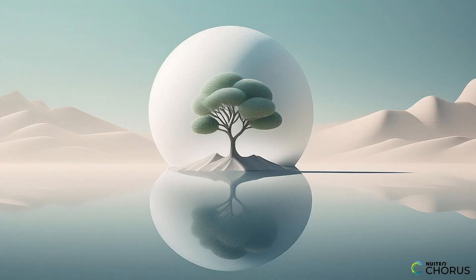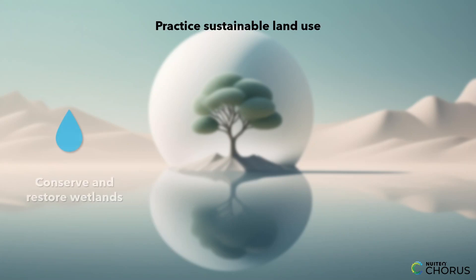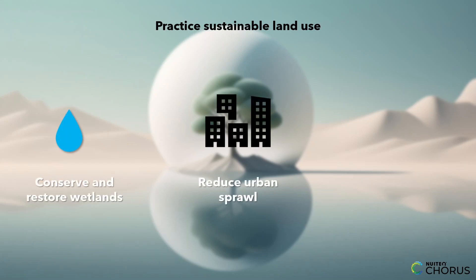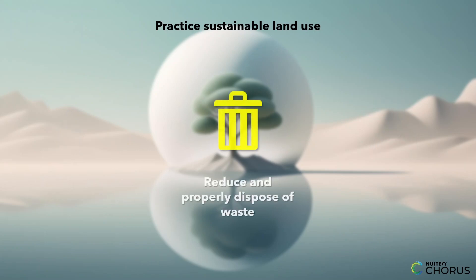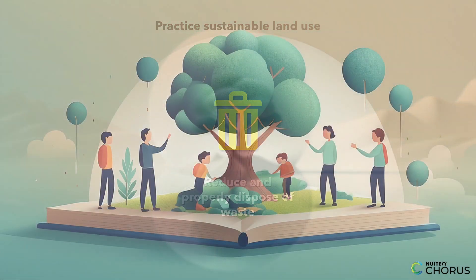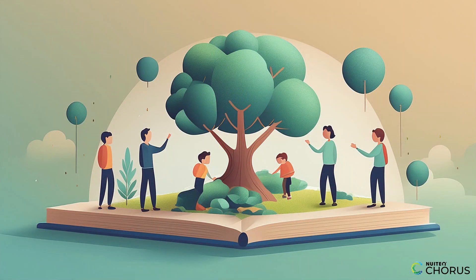Another way is to practice sustainable land use, such as conserving and restoring wetlands, reducing urban sprawl, and practicing sustainable agriculture. Additionally, reducing and properly disposing of waste can help minimize pollution.